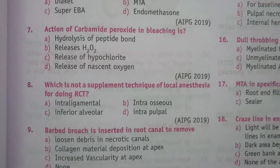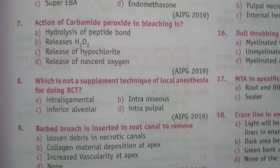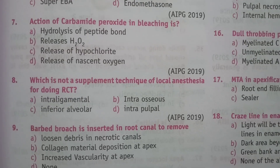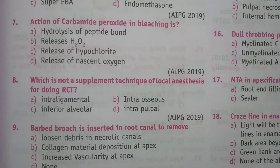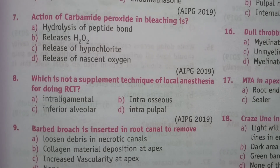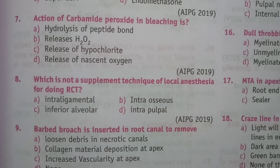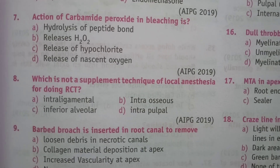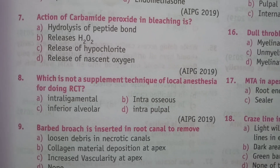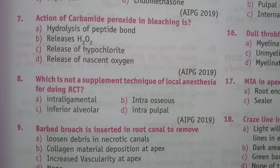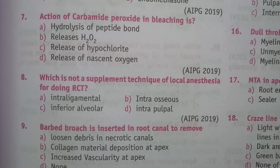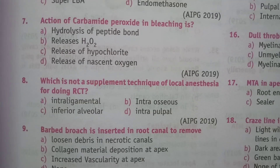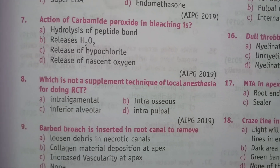Next question: which is not a supplemental technique of local anesthesia for doing RCT? Intraligamental is supplemental, intraosseous is supplemental, intrapalatal is supplemental, but inferior alveolar nerve block is not supplemental — it is the main technique. So the answer is C, inferior alveolar nerve block.